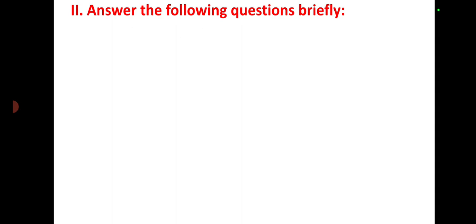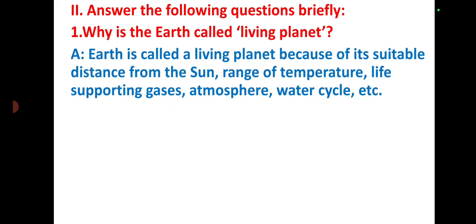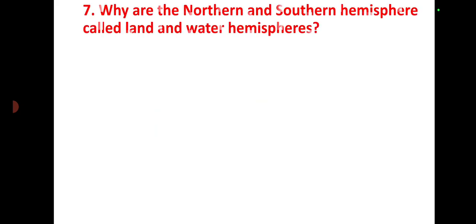Answer the following questions briefly. Why is the Earth called a living planet? Earth is called a living planet because of its suitable distance from the Sun, range of temperature, life-supporting gases, atmosphere, water cycle, etc.